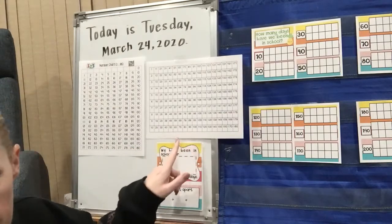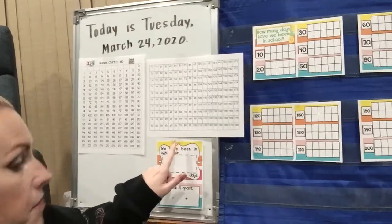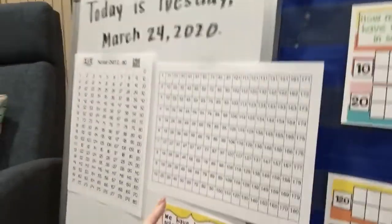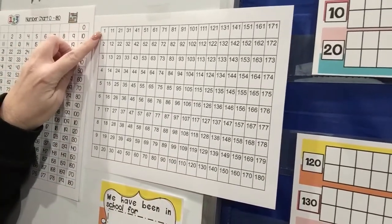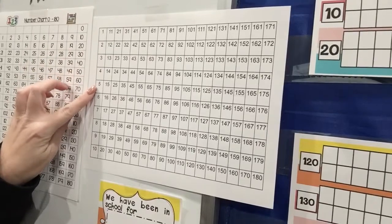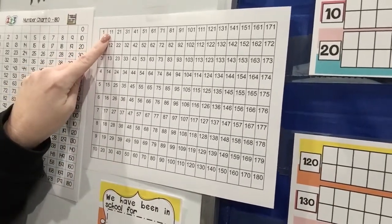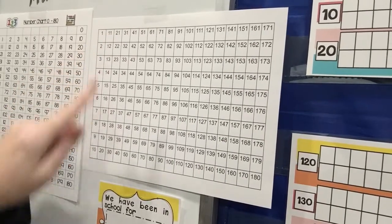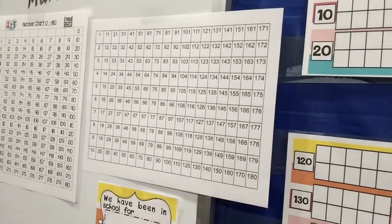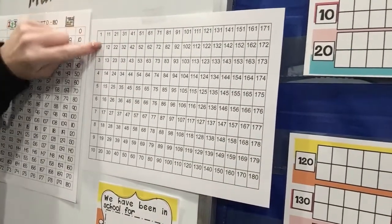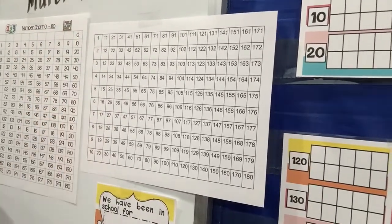And this chart — this might just blow your minds. Check this out. This chart goes all the way to 180, but look, it goes down. It starts 1, 2, 3, 4, 5, 6, 7, 8, 9, 10, and then you go up for 11. So this also goes to 180, but it's set up totally differently. It's tens, but the tens go down — it's almost like 10 rods that go down.